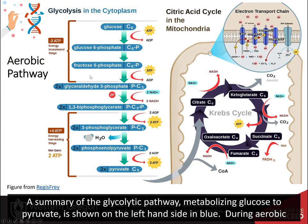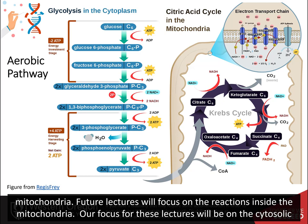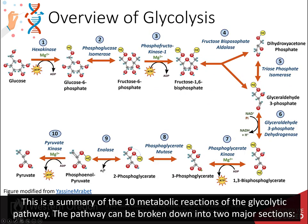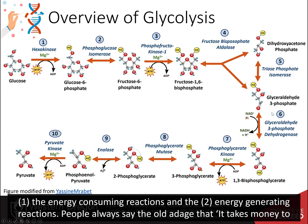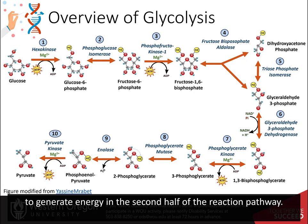A summary of the glycolytic pathway, metabolizing glucose to pyruvate, is shown on the left-hand side in blue. During aerobic metabolism, pyruvate would be converted to acetyl-CoA, where it would then enter the Krebs cycle within the matrix of the mitochondria. Future lectures will focus on the reactions inside the mitochondria. Our focus for these lectures will be on the cytosolic reactions of the glycolytic pathway. People always say the old adage that it takes money to make money. The same can be thought about the glycolytic pathway: the first section requires an investment of energy in order to generate energy in the second half of the reaction pathway.